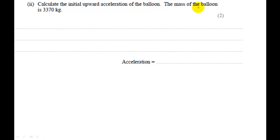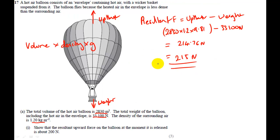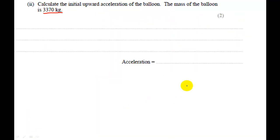Pause the video, read the question. If you've read the question it tells you calculate the initial upward acceleration of the balloon. The mass of the balloon is this so we've been given the mass and from the previous question we found the force, the resultant force on the balloon 2 1 5. So we can use Newton's second law force is equal to mass multiplied by acceleration, rearrange for acceleration it's going to be equal to F over M.